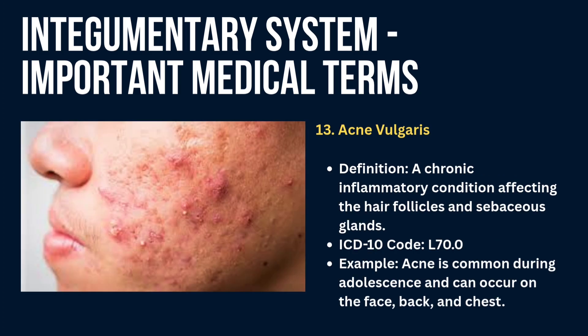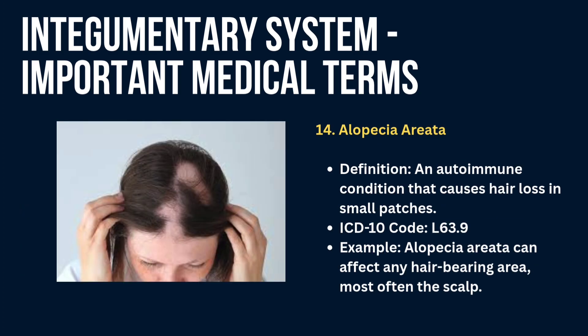Next is acne vulgaris — a chronic inflammatory condition affecting the hair follicles and sebaceous glands. Example: acne is common during adolescence and can occur on the face, back, and chest. Next is alopecia areata — an autoimmune condition that causes hair loss in small patches. Example: alopecia areata can affect any hair-bearing area, most often the scalp.